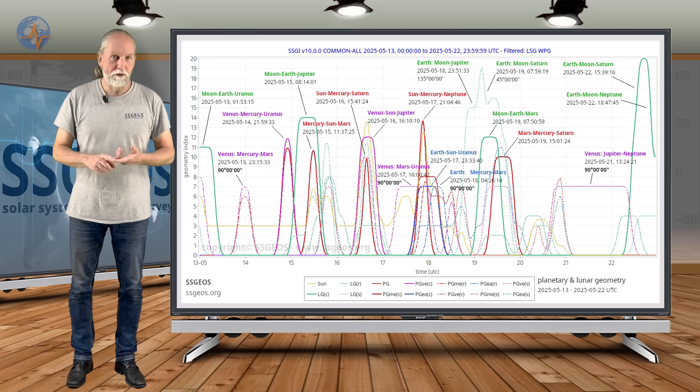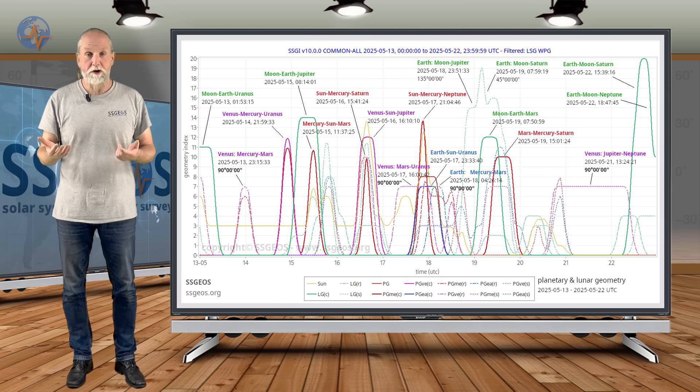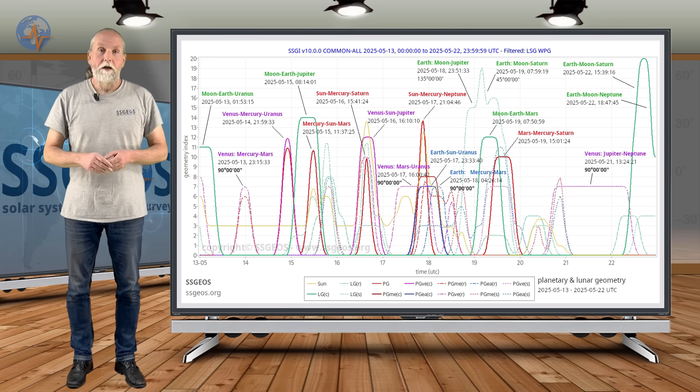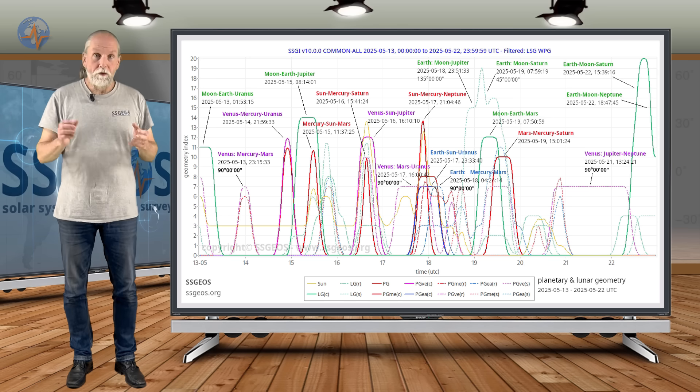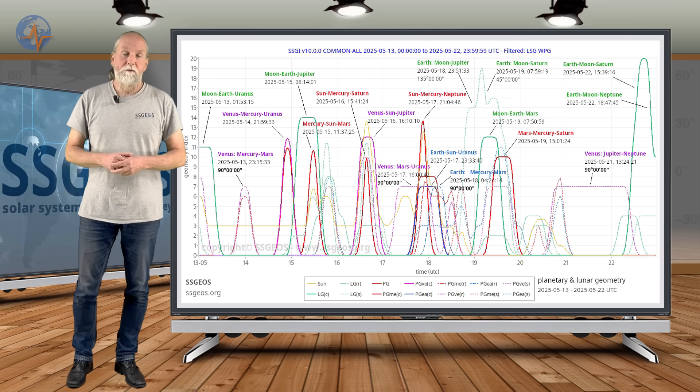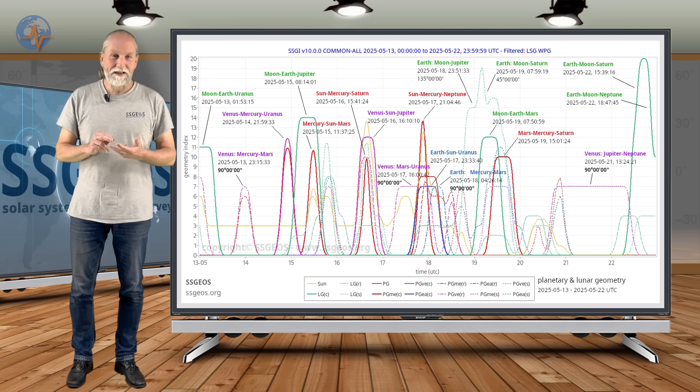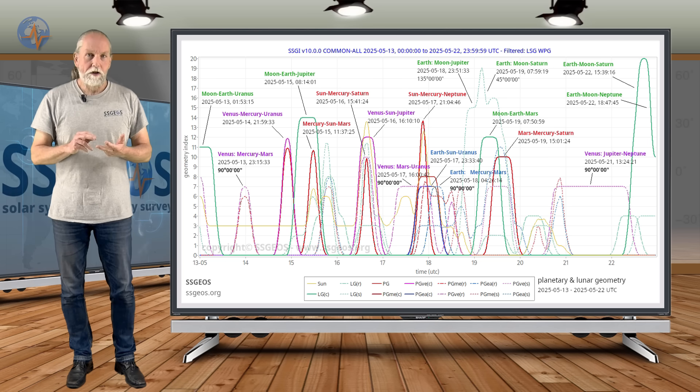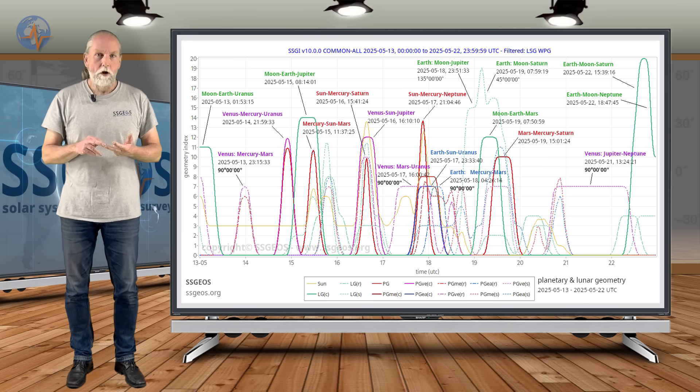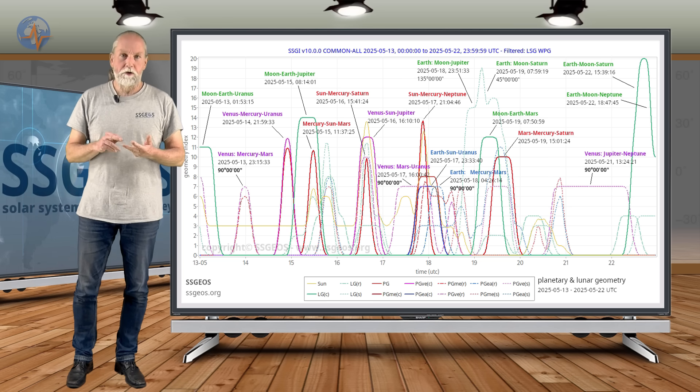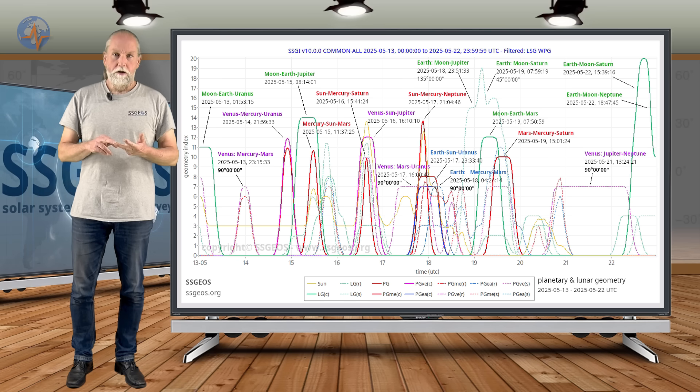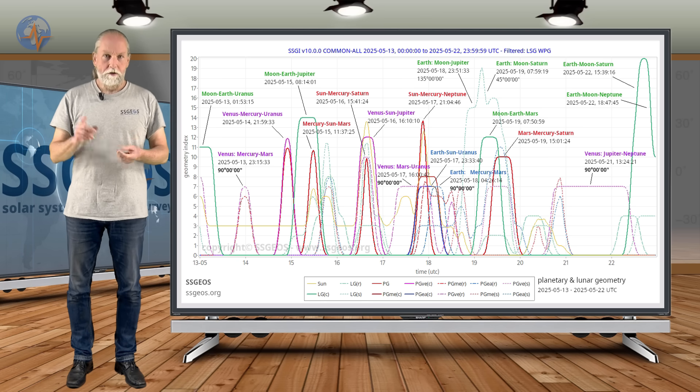We could see two or three magnitude seven earthquakes in the worst case scenario. It could go over magnitude eight. That's really, really critical here. Again, 15, 16, and 17 May. These are the days where we have really critical planetary geometry, and it can result in really large seismic activity. Stay safe. Until next time.